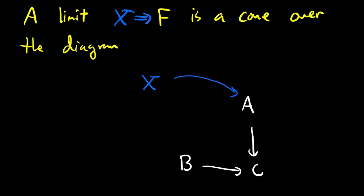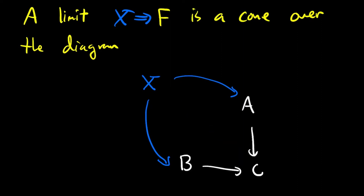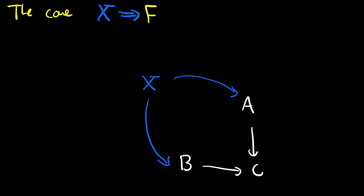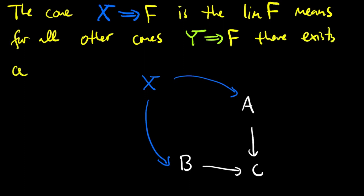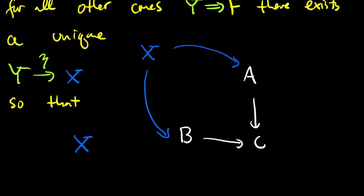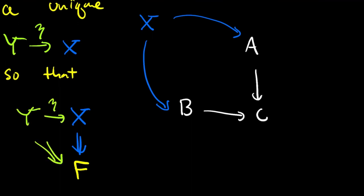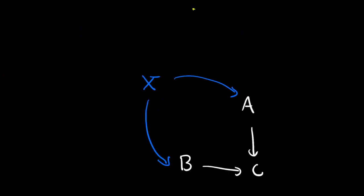A map from x to the diagram consists of a map from x to all the objects in the diagram — here, that's a, b, and c — so that the resulting diagram is commutative. The map from x to c is erased because it must be the composition of the map from x to a and a to c, which also must equal the composition of the map from x to b to b to c, and so it's determined. To say that x is the limit means that this map from x to the diagram is universal: for all other maps from y to the diagram, there exists a unique map from y to x, so that the map from y to the diagram is the composition of the map from y to x with the map from x to the diagram.